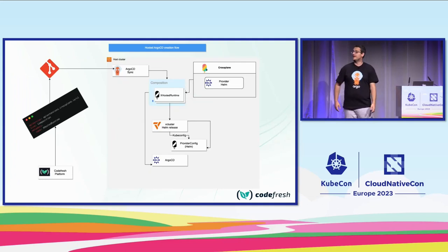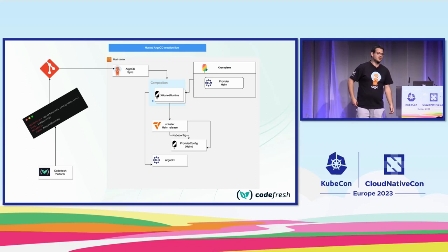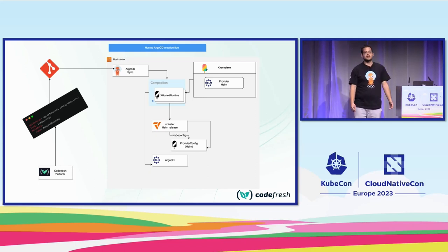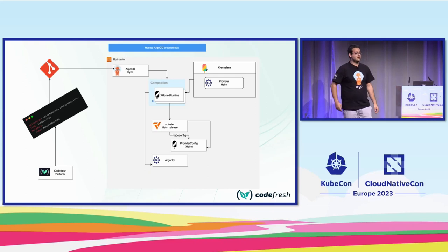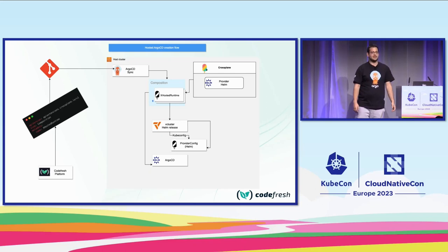Let's see how it all comes together for our solution at Codefresh. When a new hosted Argo CD is deployed, our platform commits a resource claim of the type 'hosted runtime' — which is what we call our virtual Argo CDs — into a Git repository. An Argo CD on the host cluster syncs those resources onto the host cluster, and the Crossplane Composition — mainly using the Helm provider — deploys the vCluster Helm release, creates a provider config with the kubeconfig for the vCluster, and then deploys Argo CD onto it.